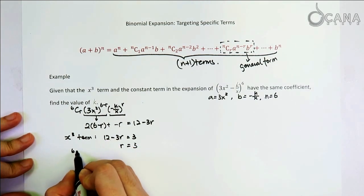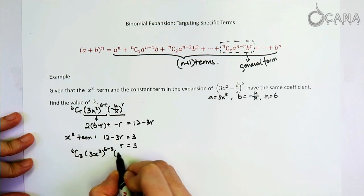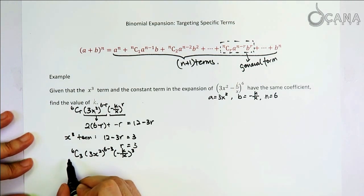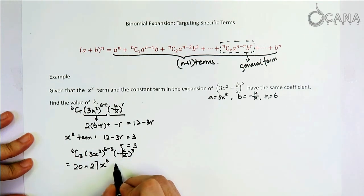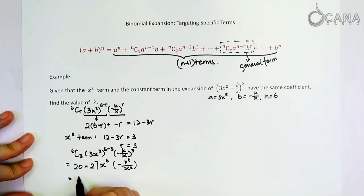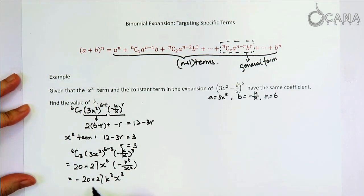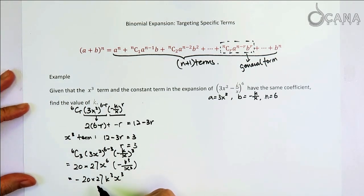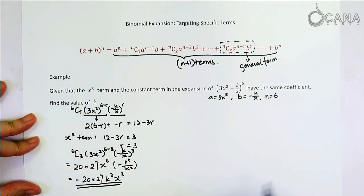So let's plug that back in to see what the x cubed term is. It will be 6 choose 3, 3x squared to the power of 6 minus 3, and then negative k over x to the power of 3. And then we just tidy this up to get that this 6 choose 3 gives us 20. And then this we get 27x to the power of 6. And from this bracket here, we get negative k cubed over x cubed. Simplifying this a little bit further gives us this expression. So you can see this is an x cubed term. Let's not worry about multiplying the numbers here first, because when you multiply them, they will be quite large and it's better to work with smaller numbers until you have to multiply them together. So let's just leave it as it is here for the x cubed term.